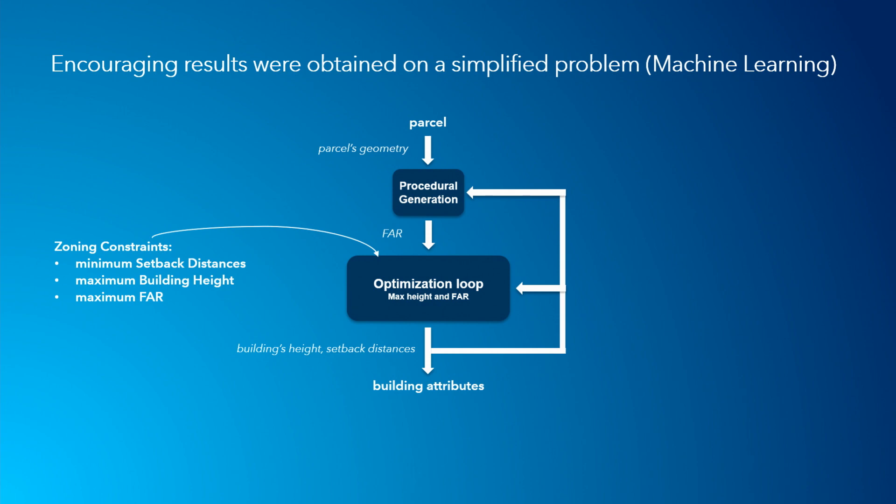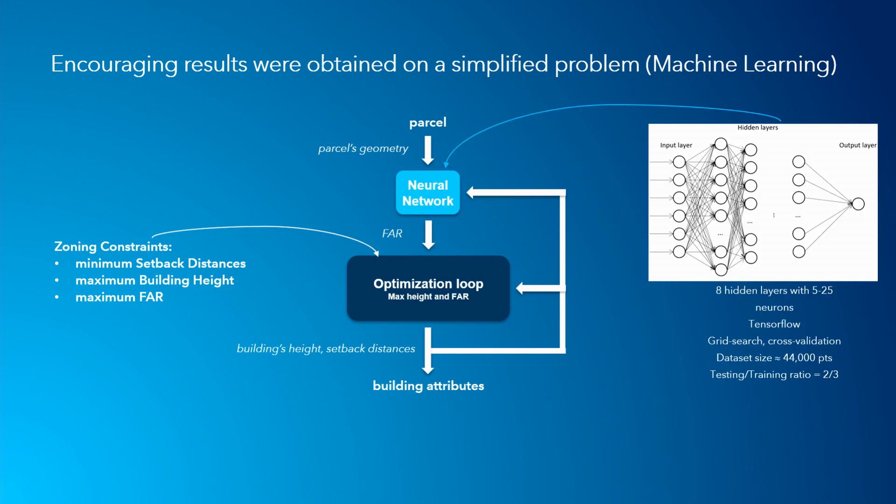But as I said, I need my tool to be fast and efficient, so I modeled this value, this variable, using a neural network. Thanks to that, I now know the FAR value for any set of inputs values: parcel geometry, building height, setback distances. That's amazing.